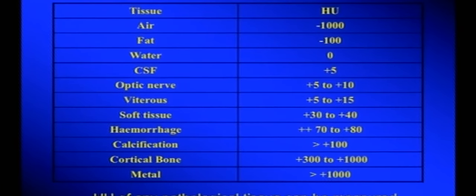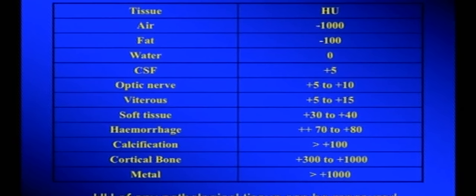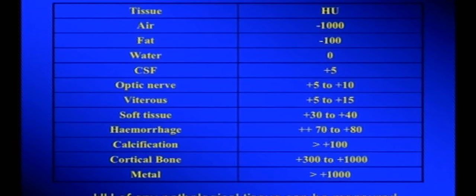In the orbit, the Hounsfield unit values for normal tissues are: air = minus 1000, fat = minus 100, water = 0, and most soft tissues fall between 0 and plus 100. Bone and metal exceed that range. Importantly, fat which was hyperintense on MRI is dark (hypodense) on CT at minus 100. Most orbital soft tissues occupy a very narrow Hounsfield range — from 0 to about 100 — making tissue differentiation difficult without windowing.